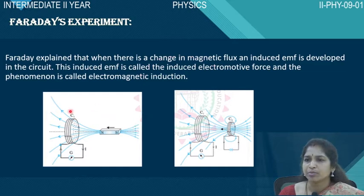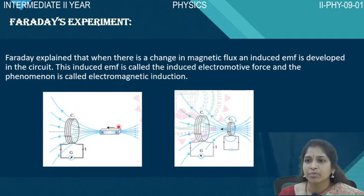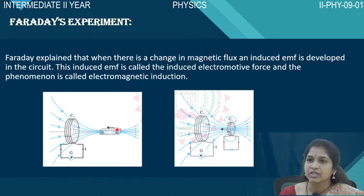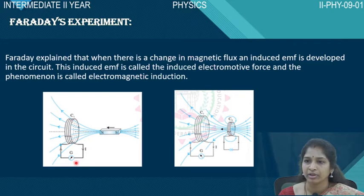In the first experiment, you can see there is a magnet with a North Pole and South Pole. Around the magnet, a magnetic field exists up to a certain extent, and that magnetic field is represented by magnetic field lines. You can see these magnetic field lines here. When this magnet is moving towards the coil, that is the first experiment. You can see a coil connected to a galvanometer.